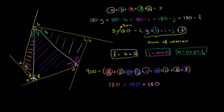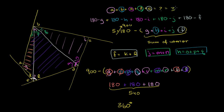So the sum of the interior angles of this irregular pentagon — and it's actually true for any pentagon — is 180 plus 180 plus 180, which is 540 degrees. If we want the sum of the exterior angles, we subtract from 900: 900 minus 540 equals 360 degrees. And we are done — the sum of the exterior angles equals 360 degrees.